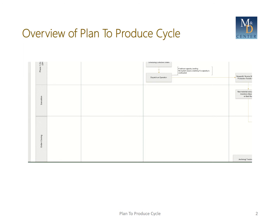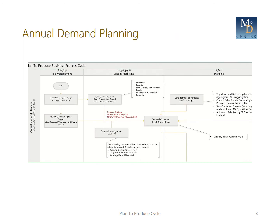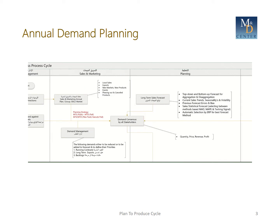Then we have execution and order closing. In annual demand planning, sales and marketing create their marketing annual plan according to strategic directions of top management — covering local sales, exports, new markets, new products, events, phasing-out products, and cancelled products. At this stage, the company should define its planning strategy: make-to-stock (push), make-to-order (pull), or a hybrid plan-push/execute-pull approach.